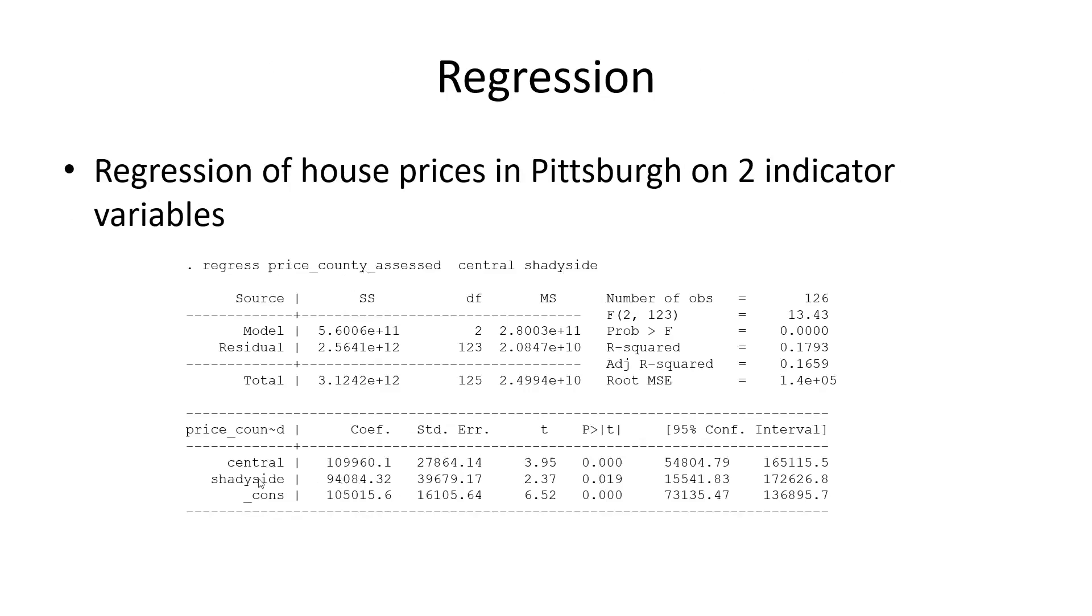Ninety-four thousand dollars more for living in Shadyside versus not, and central air conditioning is even more, $109,000. It's also in part because air conditioning is a marker for all kinds of things, or lack of air conditioning is a marker for lack of other things also, probably. And we have only two variables in the model. R-squared, 17-18%, not that great, but two indicator variables, what can you expect?